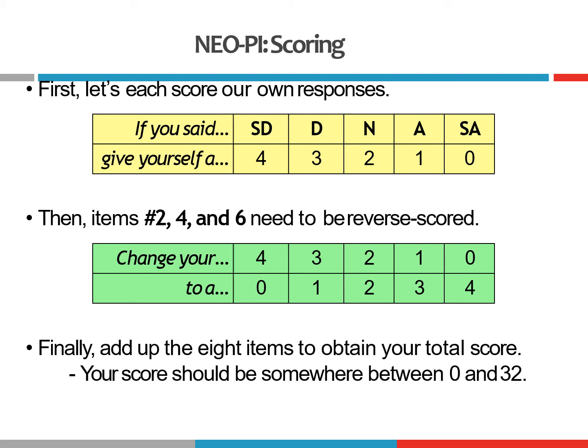Once you have done that for all eight questions, you need to reverse score number two, number four, and number six. Remember, we have some items that are reverse scored so that we can avoid response set. So once you've scored all of your answers using the yellow table, go back to number two, number four, and number six, and change your numbers as shown in the green table. For example, if you initially wrote a four for those items, you need to change it to a zero. Once you've done your scoring and reverse scoring, add up your total score — it should be somewhere between zero and 32.